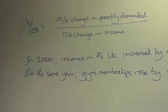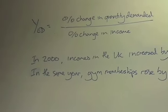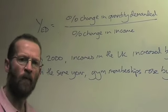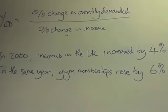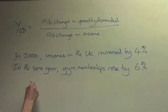So let's look at an example. In 2000, incomes in the UK increased by 4%. In the same year, gym memberships rose by 6%. So we can work out the income elasticity of demand.